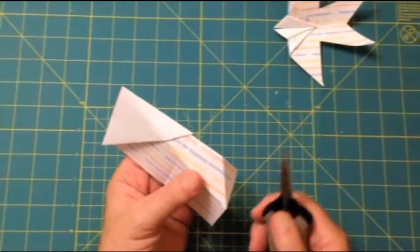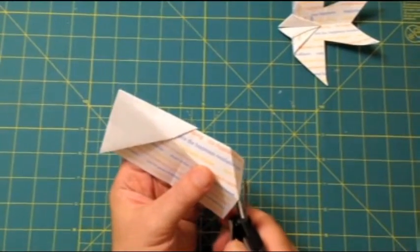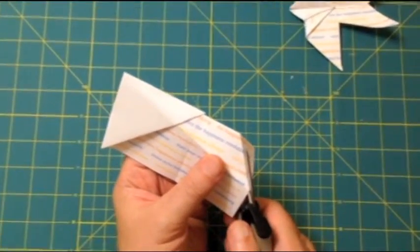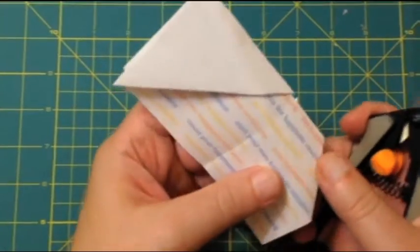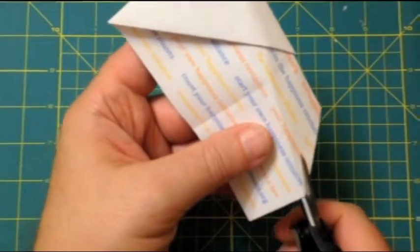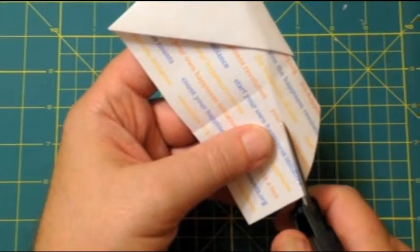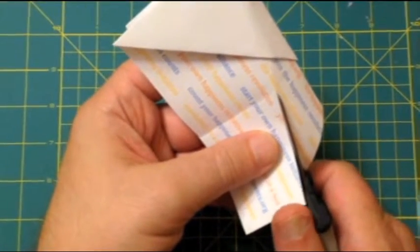So now we're cutting the swallow's tail. Cut along here, up to the fold.